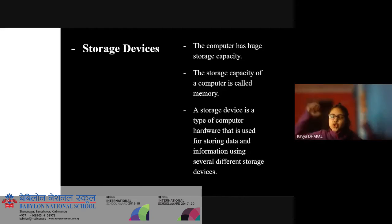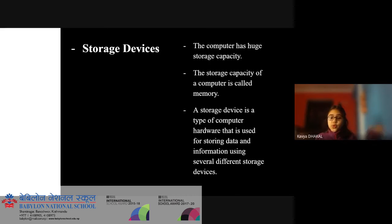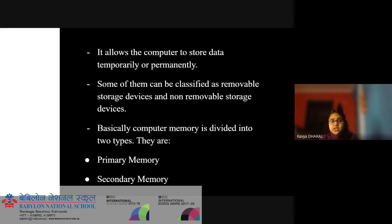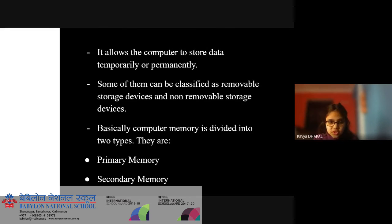Storage devices. The computer has huge storage capacity. The storage capacity of a computer is called memory. A storage device is a type of computer hardware used for storing data and information. It allows the computer to store data temporarily or permanently. Some can be classified as removable or non-removable storage devices. Basically, computer memory is divided into two types: primary memory and secondary memory.